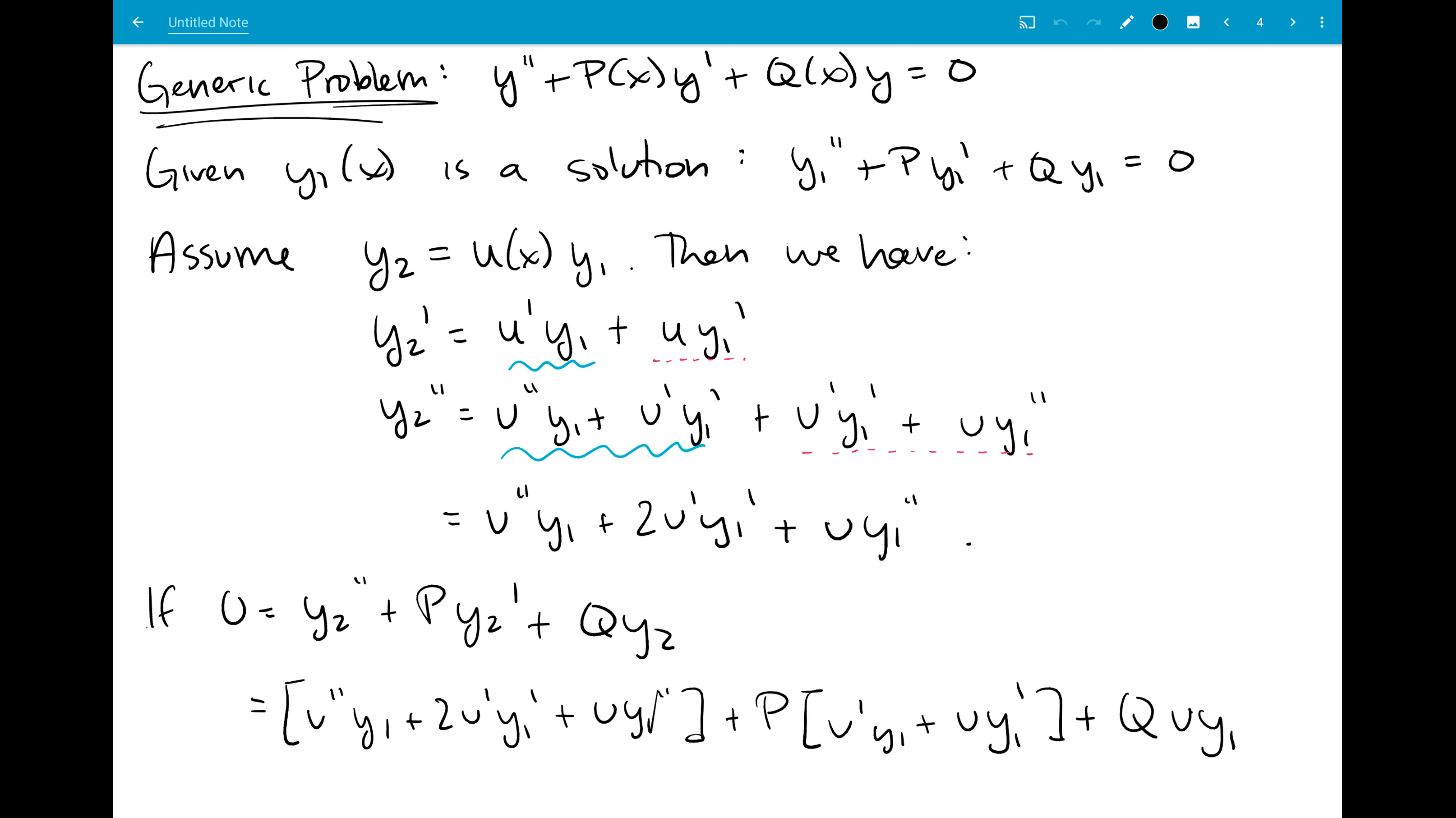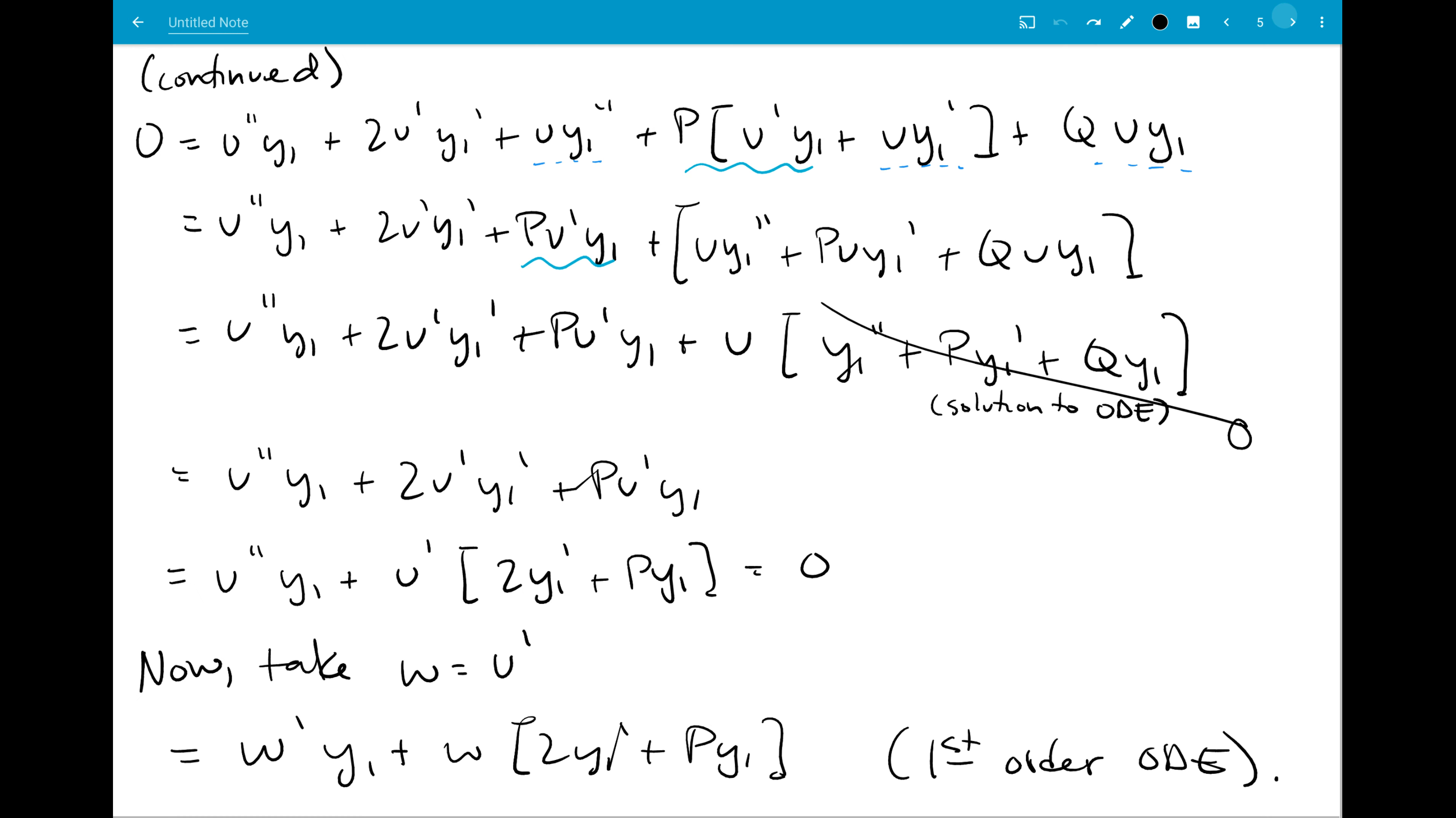So we looked at that generic problem, which was a lot of notation, but hopefully kind of showed how the entire problem always works. Most importantly, it's easiest to see the, sorry, wrong place to circle, the way that the u term drops out in the general form, because everything still looks like your differential equation.